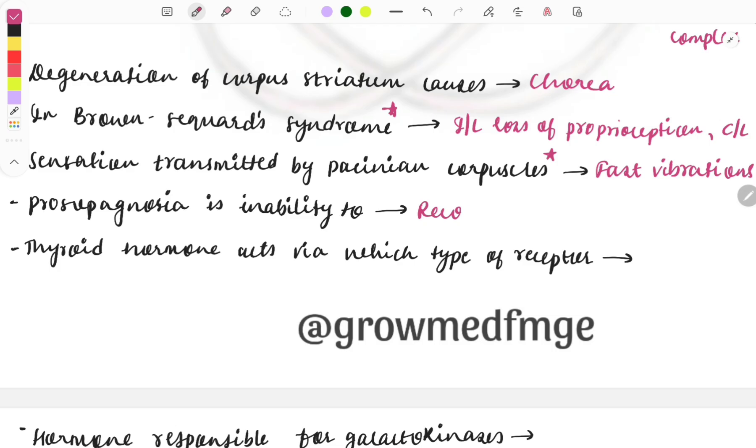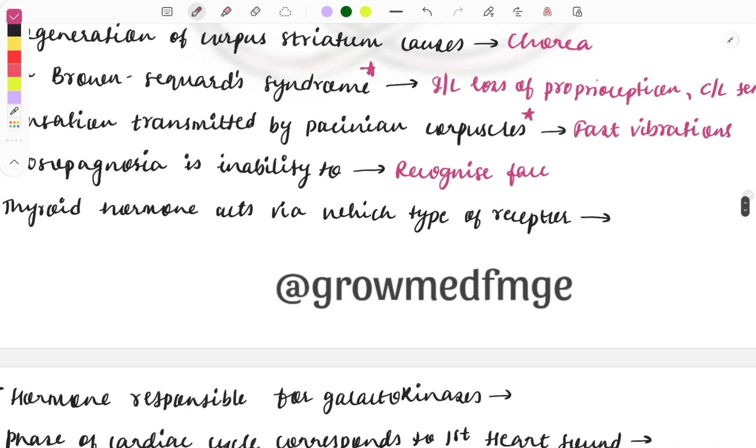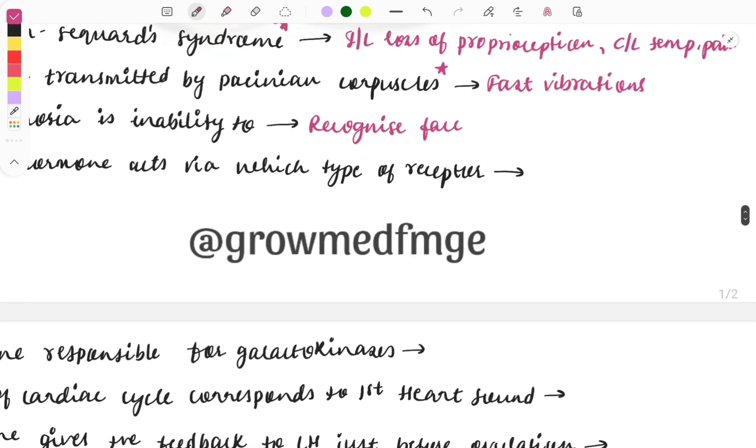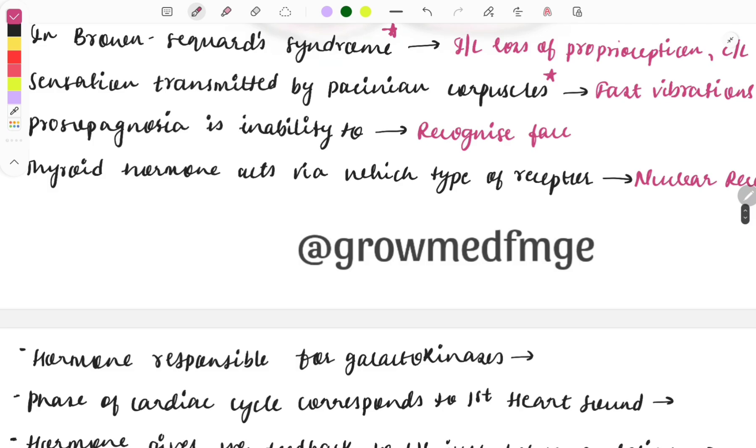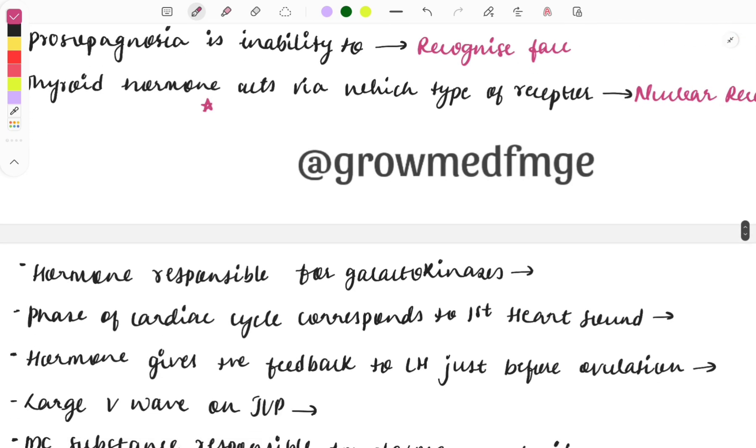Then prosopagnosia is inability to recognize the faces and this is asked in integration with the psychiatry also, that inability to recognize the faces. Then thyroid hormone acts via which type of receptor? So it acts via the nuclear receptor. So this receptor part is also important, the hormone and the receptor. And noting down that you will be getting one short question on the hormones, either the function of the hormones or the receptor of the hormones or feedback mechanism of the hormones and all those things. So hormone is a must-do topic.